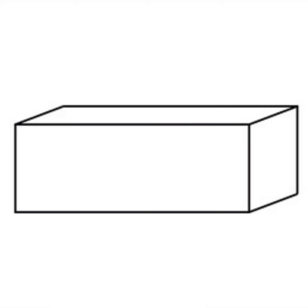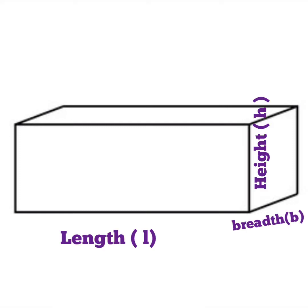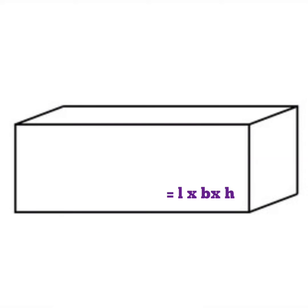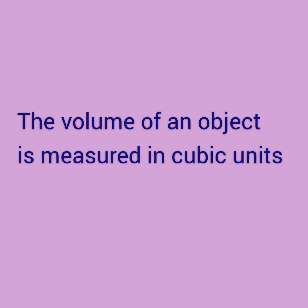Now let us see how to find the volume of the cuboid using the formula. The length L, breadth B and height H is multiplied together to get the volume. That is L into B into H and it is written with the cubic units.